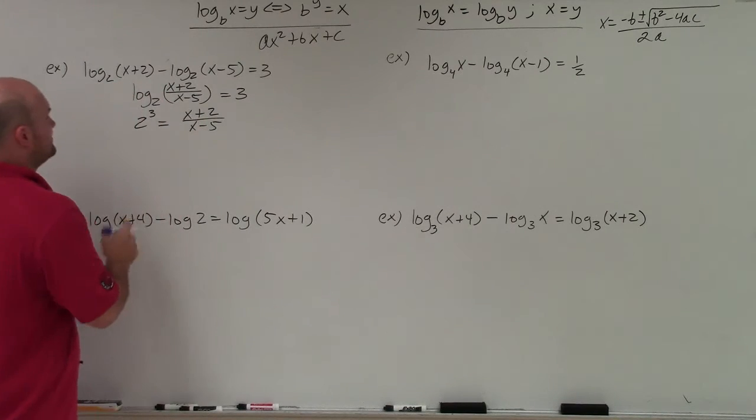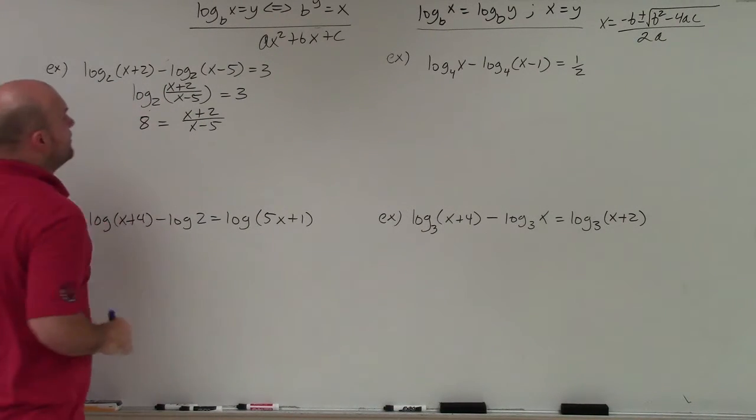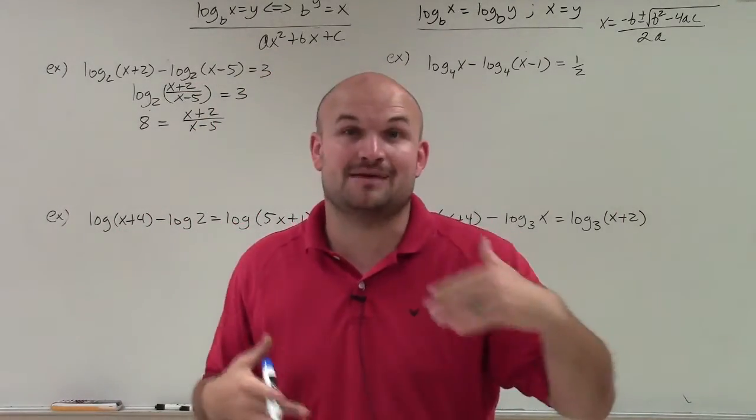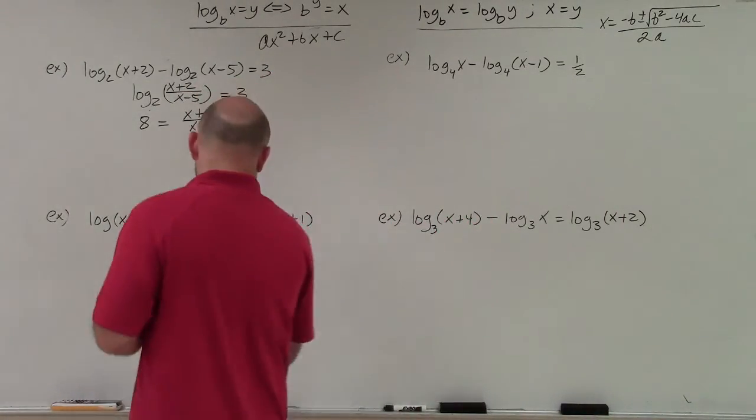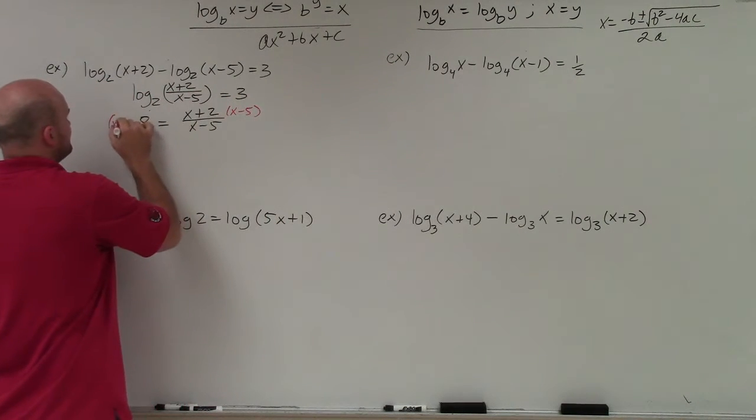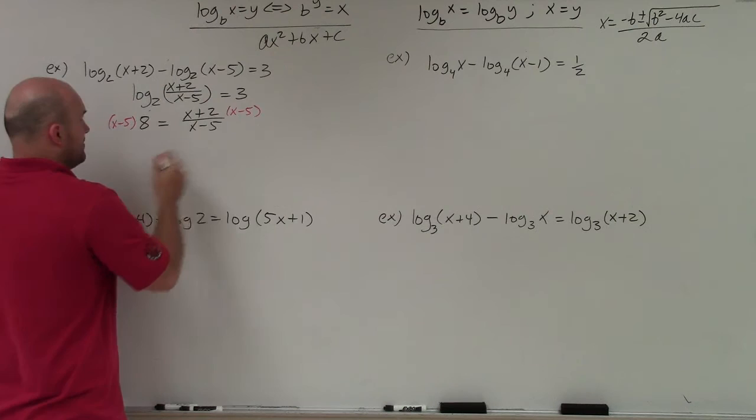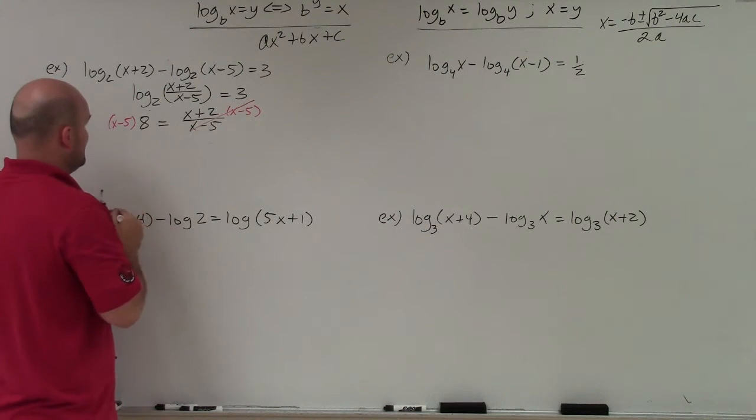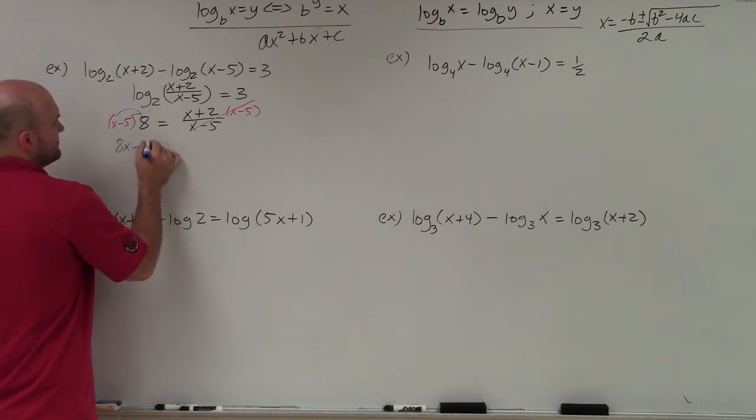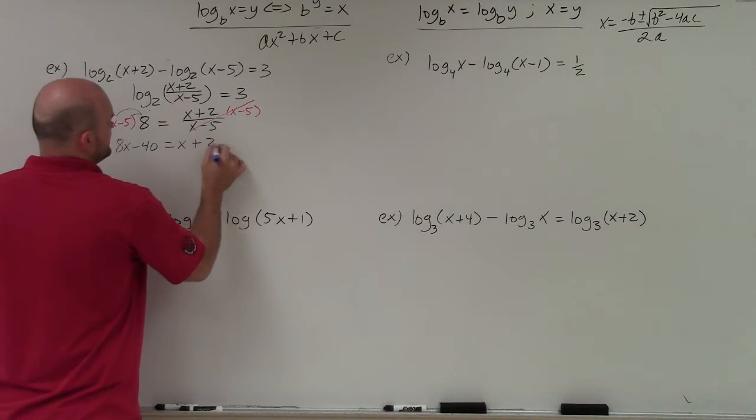All right, now, 2 cubed is going to be 8, right? Now what I need to do is I need to solve for x. I need to get, I can't have x in the numerator and denominator. I have to get this x off of the denominator. So to do that, I'm going to multiply by x minus 5 on both sides. By doing that, that now divides to 1. And I can apply the distributed property here. And I get 8x minus 40 equals x plus 2.